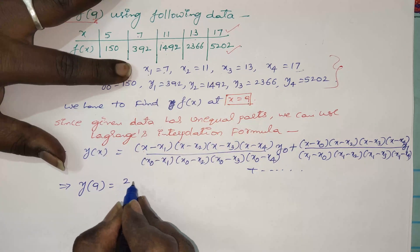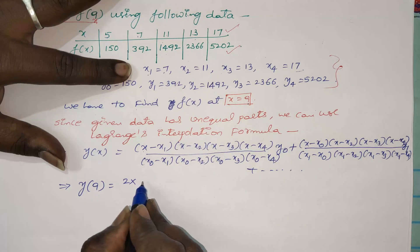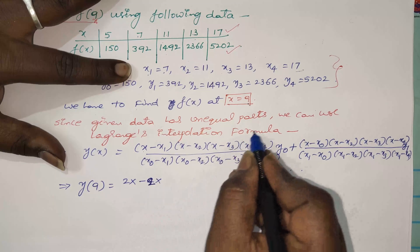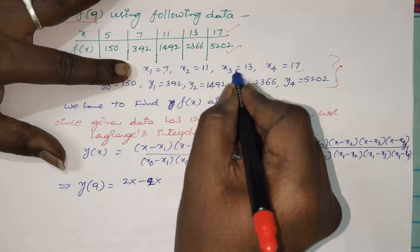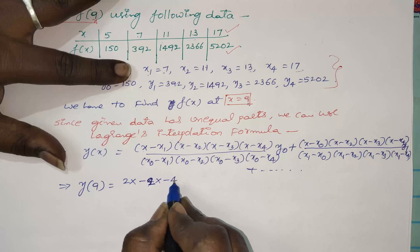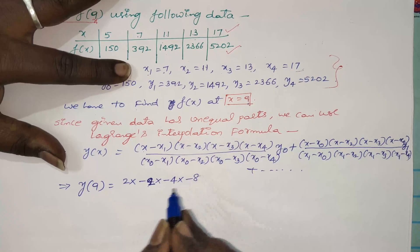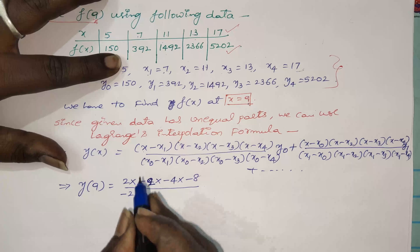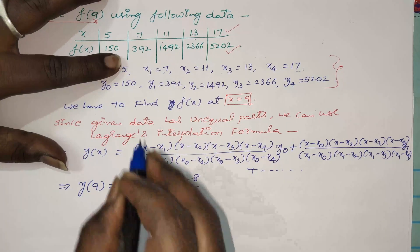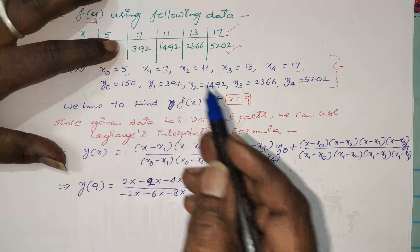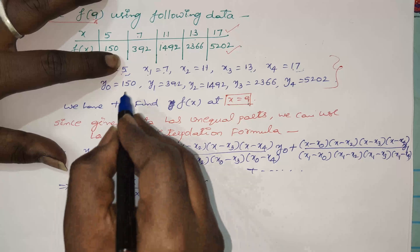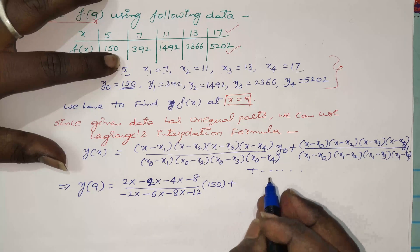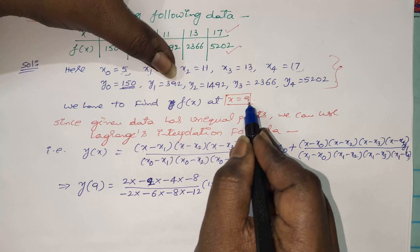For the first term, skip x0 equals 5 and compute: 9 minus 7 equals 2, 9 minus 11 equals minus 2, 9 minus 13 equals minus 4, 9 minus 17 equals minus 8. In the denominator from x0 equals 5: 5 minus 7 equals minus 2, 5 minus 11 equals minus 6, 5 minus 13 equals minus 8, 5 minus 17 equals minus 12. Multiply by y0 equals 150.